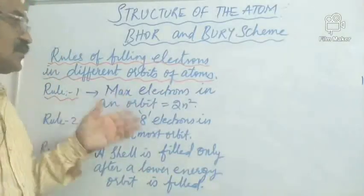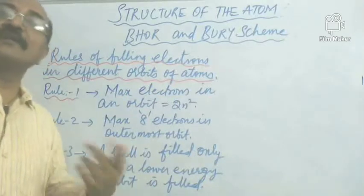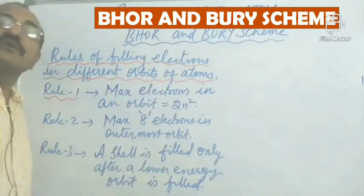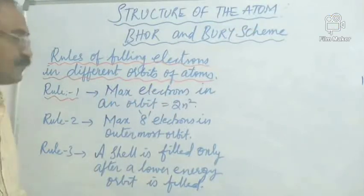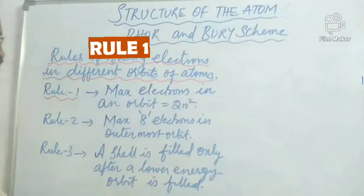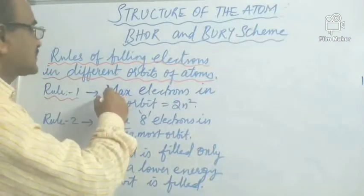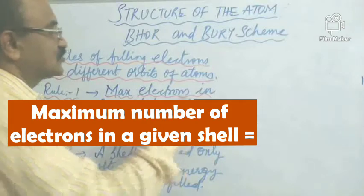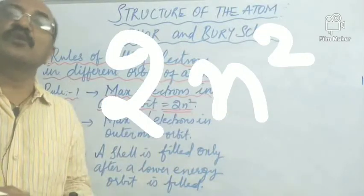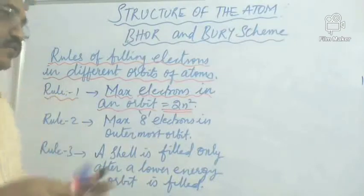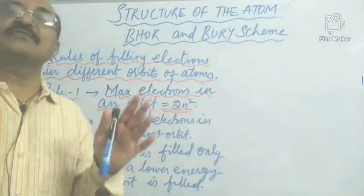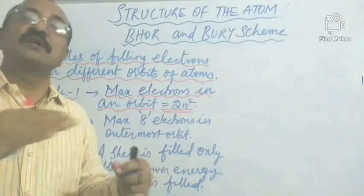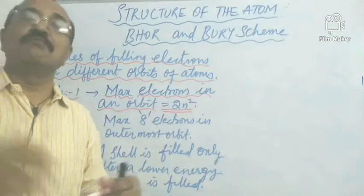We have here the Bohr and Bury scheme of filling up the different orbits of an atom with electrons. There are three rules. Rule one says that the maximum electrons in an orbit should be equal to 2N². It means there is a certain maximum number of electrons, and beyond that, the orbit cannot have electrons.